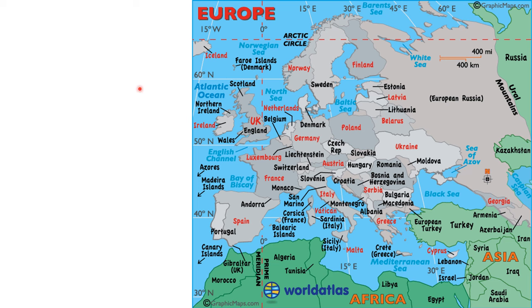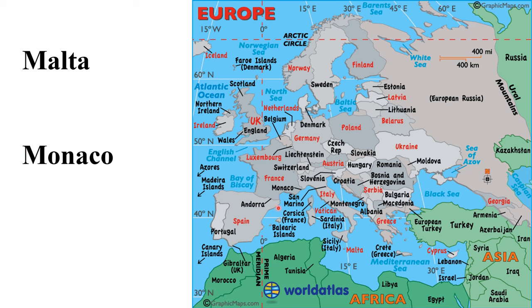In Europe, there are three small countries without permanent rivers. The first one is Malta, an island country in the Mediterranean Sea with no permanent rivers. The second one is Monaco, the second smallest country in Europe, which shares borders with France, and has no permanent rivers. Vatican City is the smallest country in Europe as well as the smallest independent country in the world; it is inside Rome City and has no permanent rivers.